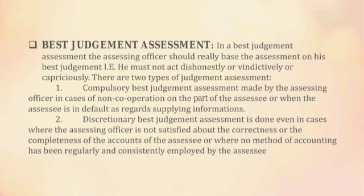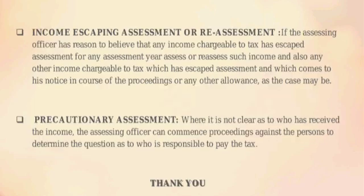Compulsory best judgment assessment is made by the assessing officer in cases of non-cooperation on the part of the assessee or when the assessee is in default as regards supplying information. Discretionary best judgment assessment is done when the assessing officer is not satisfied about the correctness or completeness of the accounts of the assessee, or where no method of accounting has been regularly and consistently employed.